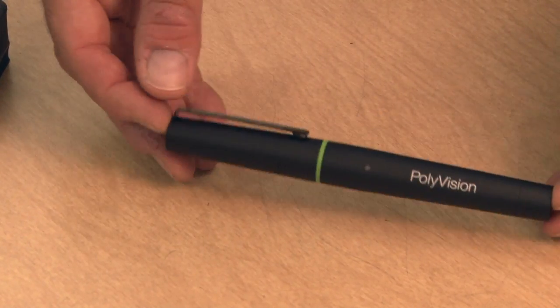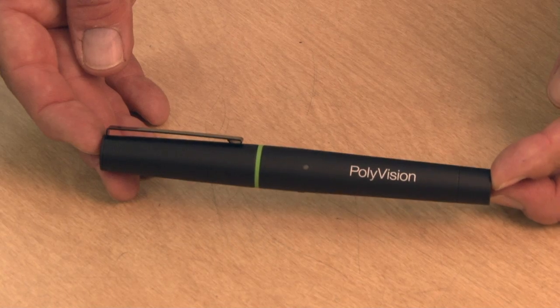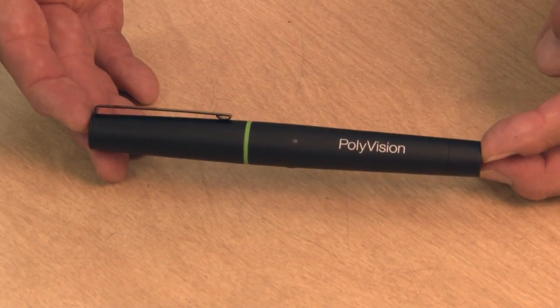Battery life depending upon the use of the stylus, probably go about six to eight weeks on one AAA battery.